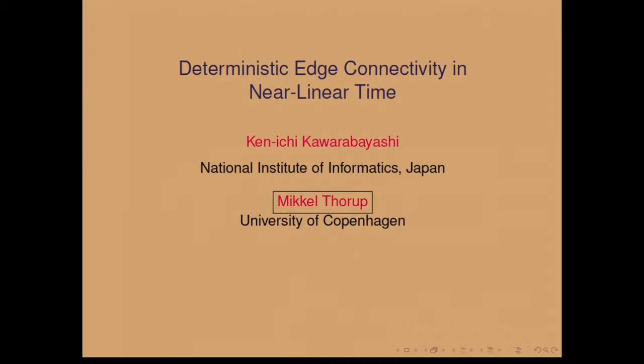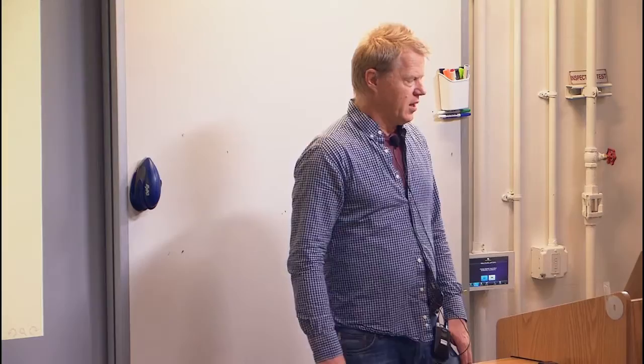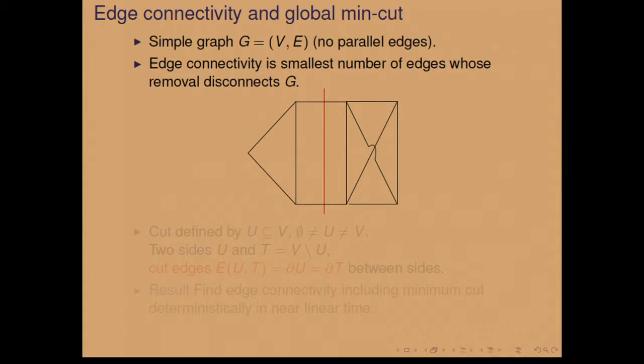I'm going to talk about how to compute the edge connectivity of a graph deterministically in near-linear time. We're dealing with simple graphs — just classic graphs, no parallel edges, just pairs of points. The edge connectivity of such a graph is the smallest number of edges whose removal will disconnect the graph.